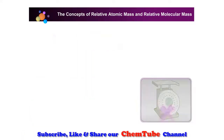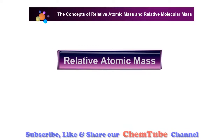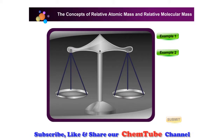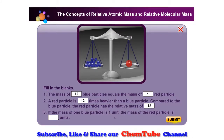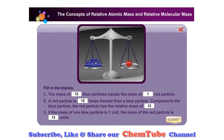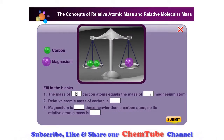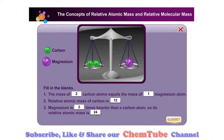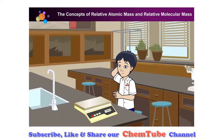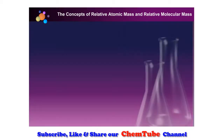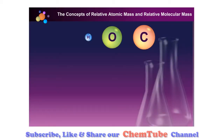It is therefore easier to give each atom a number on a scale and see how heavy they are compared to each other. This number is called the relative atomic mass. From these examples, can you give the definition of relative atomic mass? We cannot weigh a single atom, but we can determine the mass of one atom relatively.